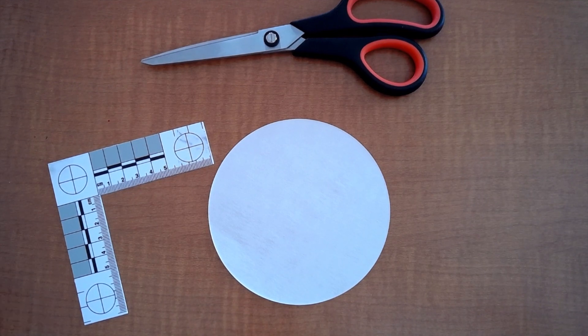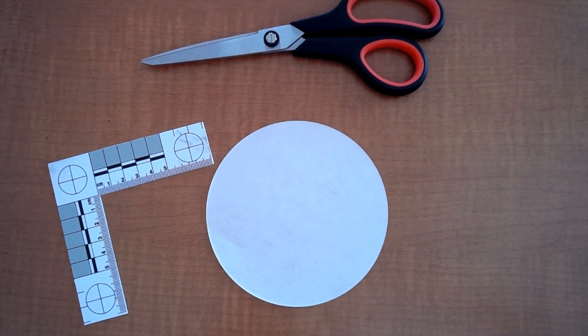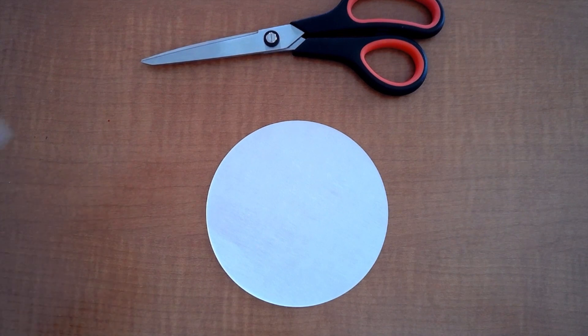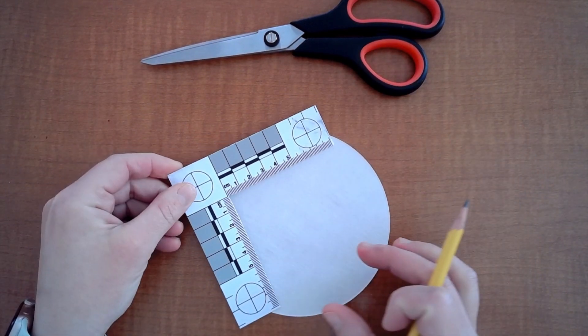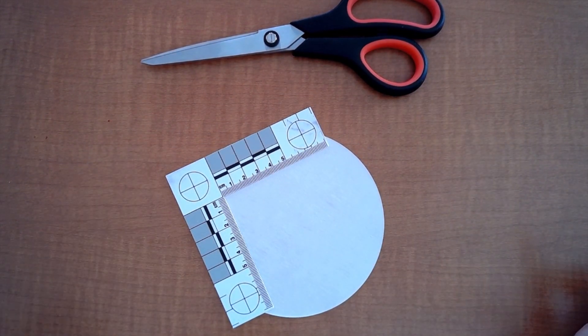But we first need to get our paper ready. So in order for it to fit in our beaker we need to cut it to the right size and it just so happens that your L-shaped ruler is perfect for this job. We are going to make an eight centimeter by eight centimeter square.